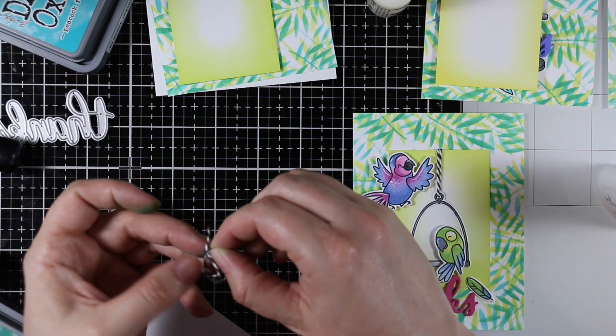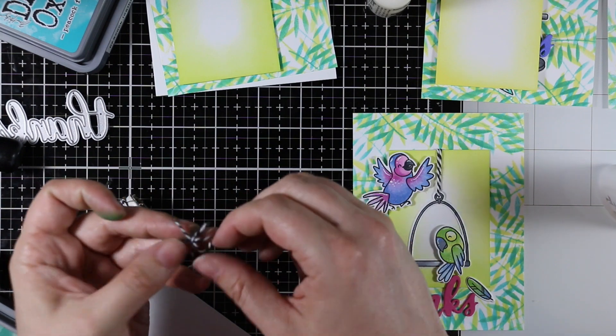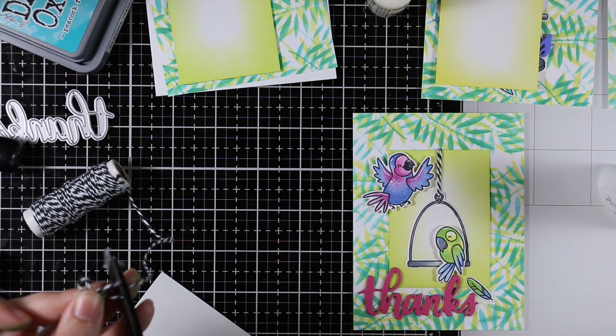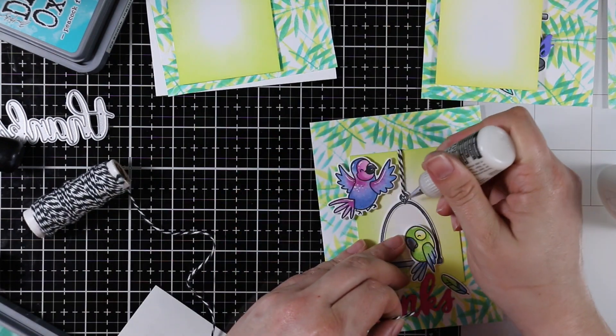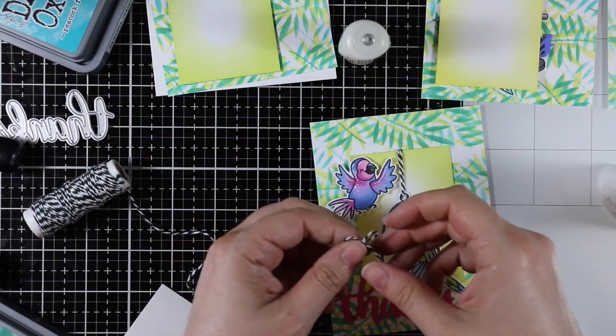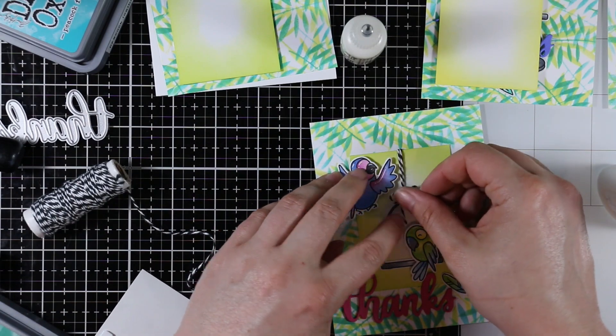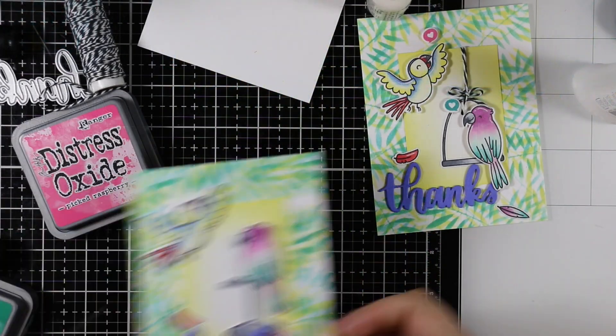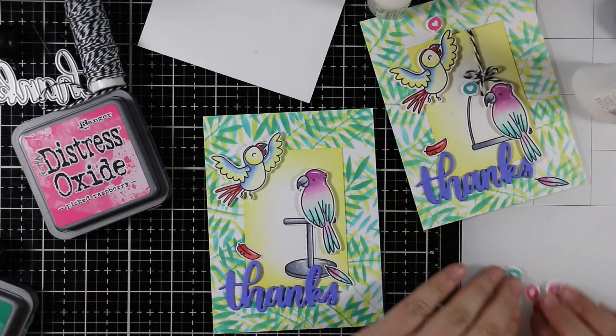I'm again just going to use Nouveau glue applying it just to the thickest areas of the sentiment. I don't want it oozing out everywhere, it does dry fairly clear and pretty much matte as well. Then I did some fiddling and made a teeny little bow, just making bunny ears basically and then twist it. I applied a good dollop of multi-medium matte adhesive and pressed the bow into that.